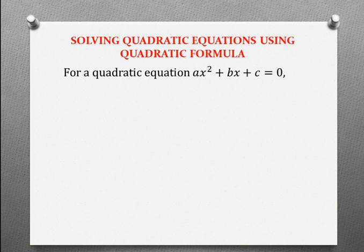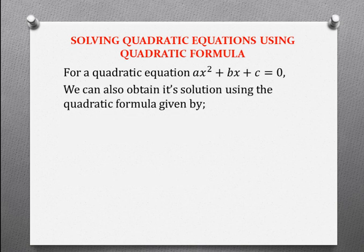For a quadratic equation AX squared plus BX plus C equals to zero, we can also obtain its solution using the quadratic formula given by this. So this is our quadratic formula: X equals negative B plus or negative square root of B squared minus 4AC out of 2A.